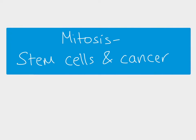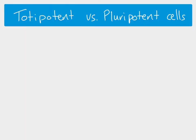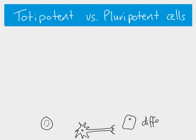Welcome to this short video on mitosis and the role of mitosis in stem cells and cancer. We've got lots of different kinds of cells — red blood cells, neuron cells, fat cells — and they're differentiated, which means they're specialized. Even though different cells have exactly the same genome, different genes are being expressed, so some genes will be turned on in the red blood cell which are turned off in the neuron.